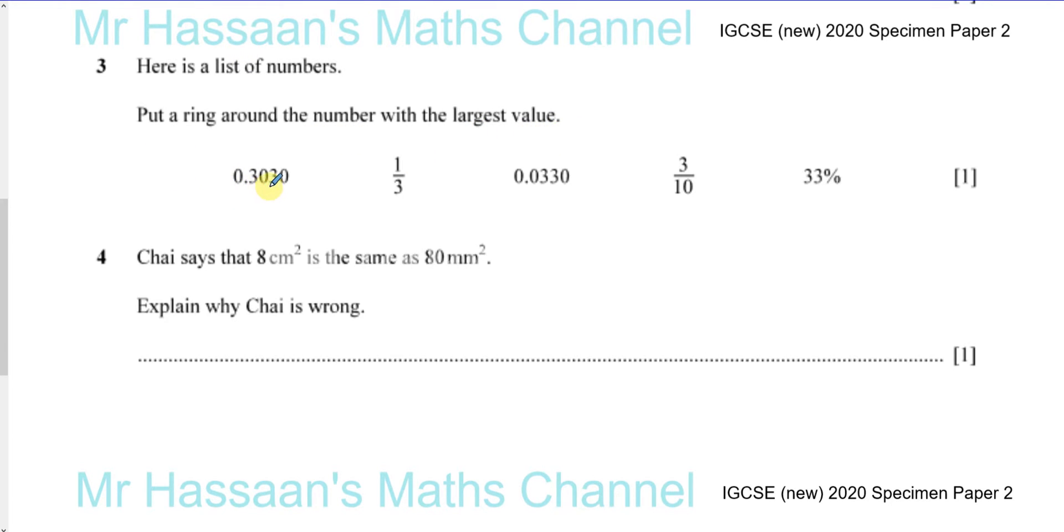Okay, so you have 0.3030 and 1/3, and 0.0330, 3/10, and 33%. Now, the most sensible thing to do in order to compare these would be to write all of these as decimals and write them out to the same number of decimal places so that we could compare them.